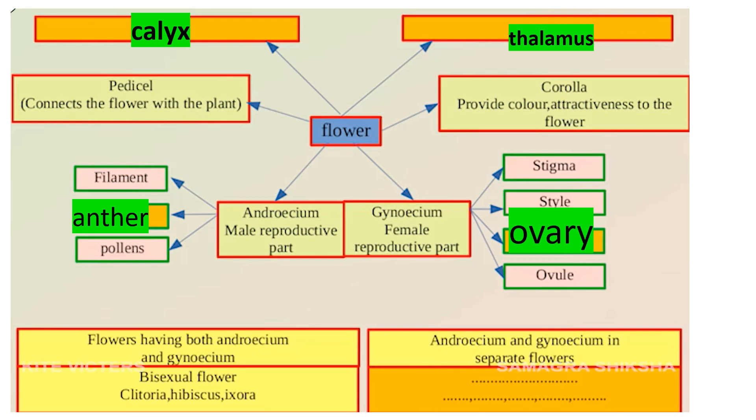Flowers that have both Androecium and Gynoecium are called Bisexual Flowers. Examples of bisexual flowers are Clitoria, Hibiscus, and Ixora.